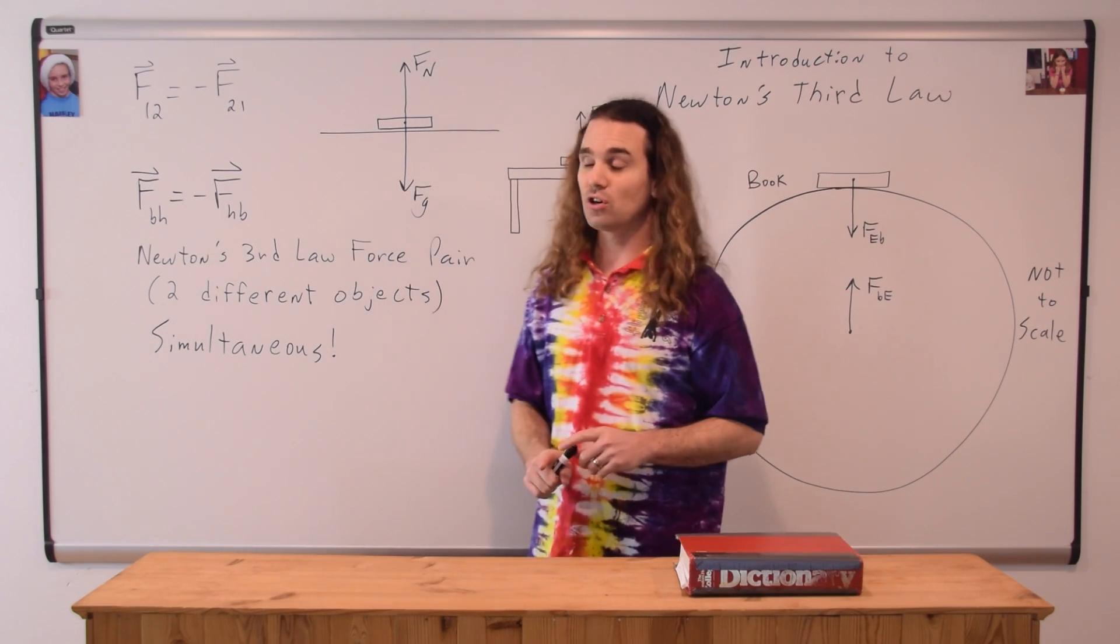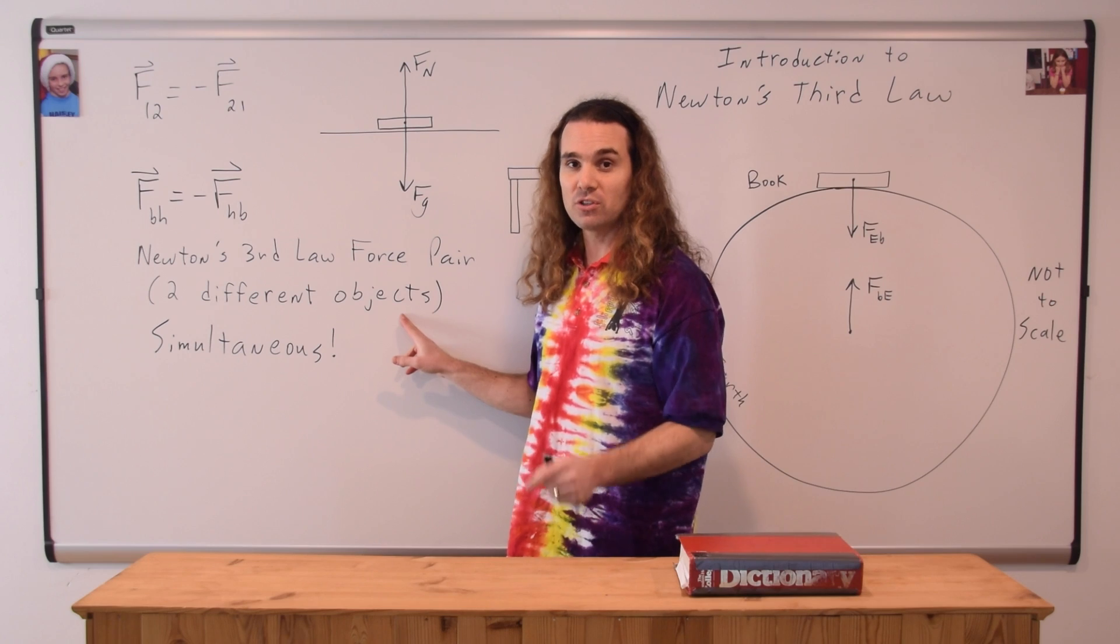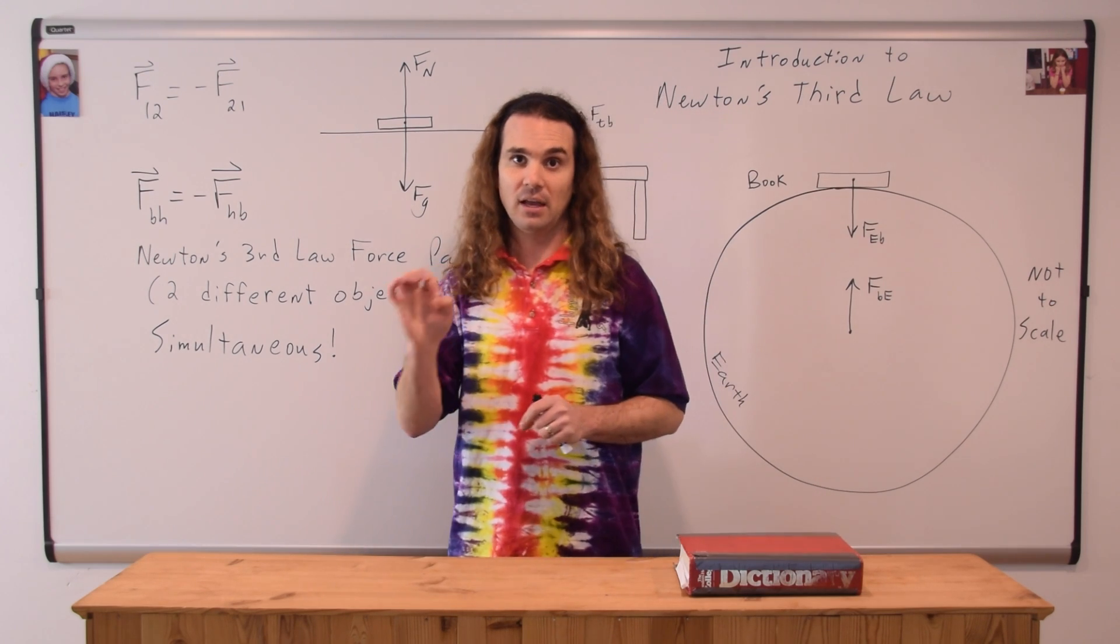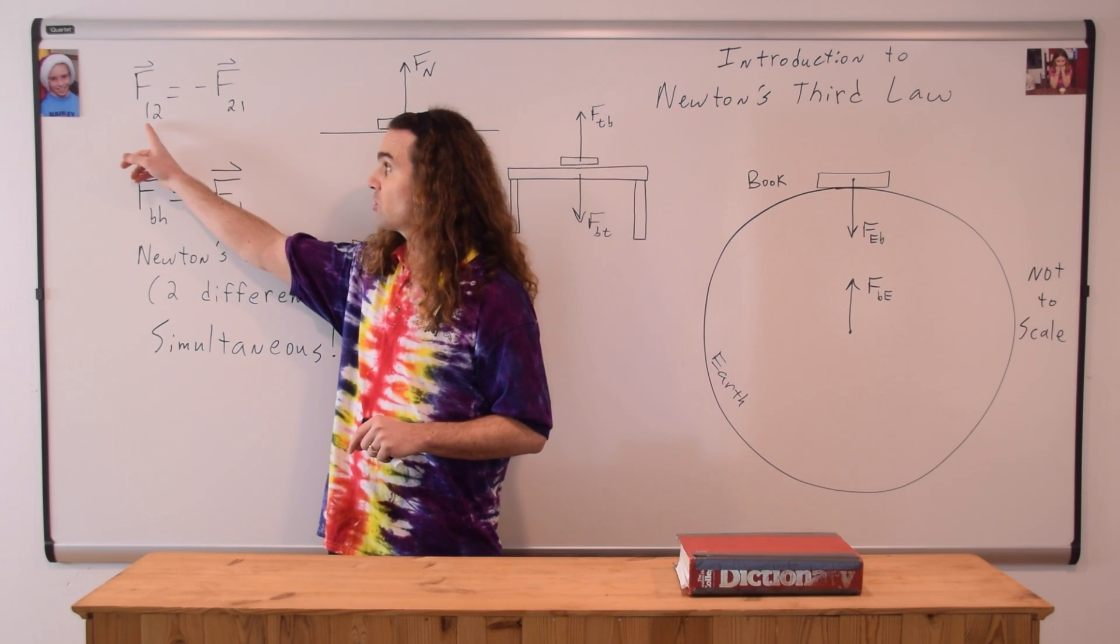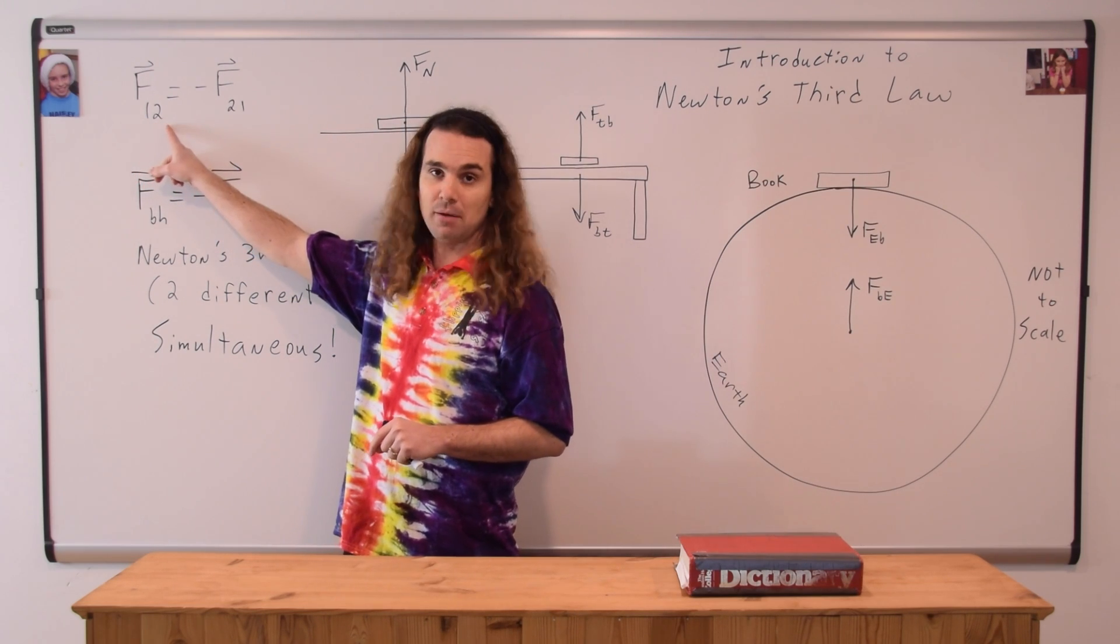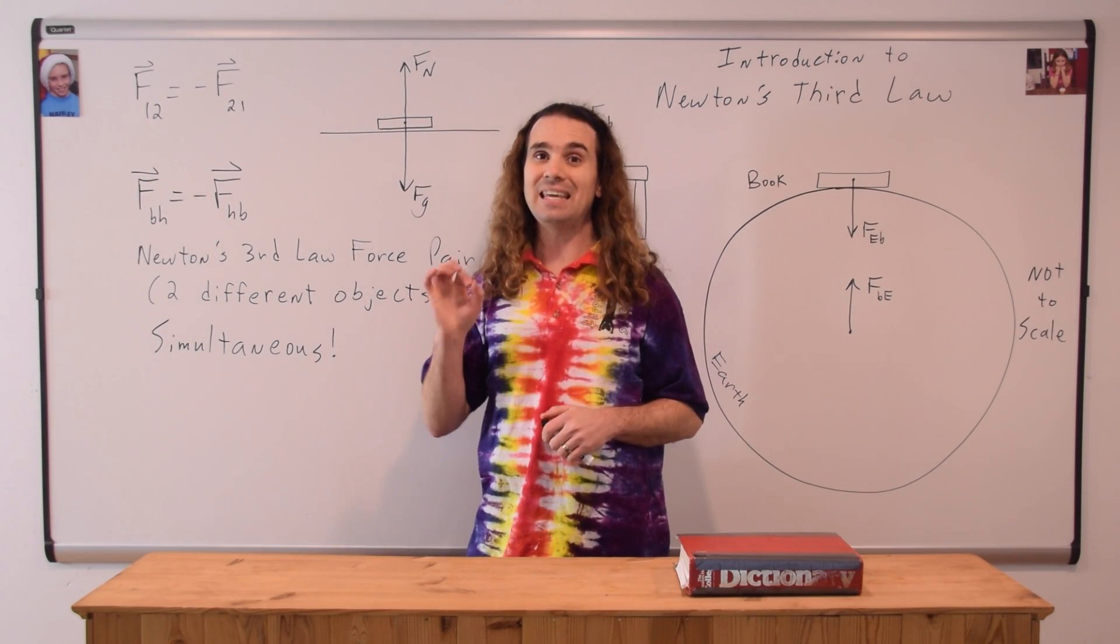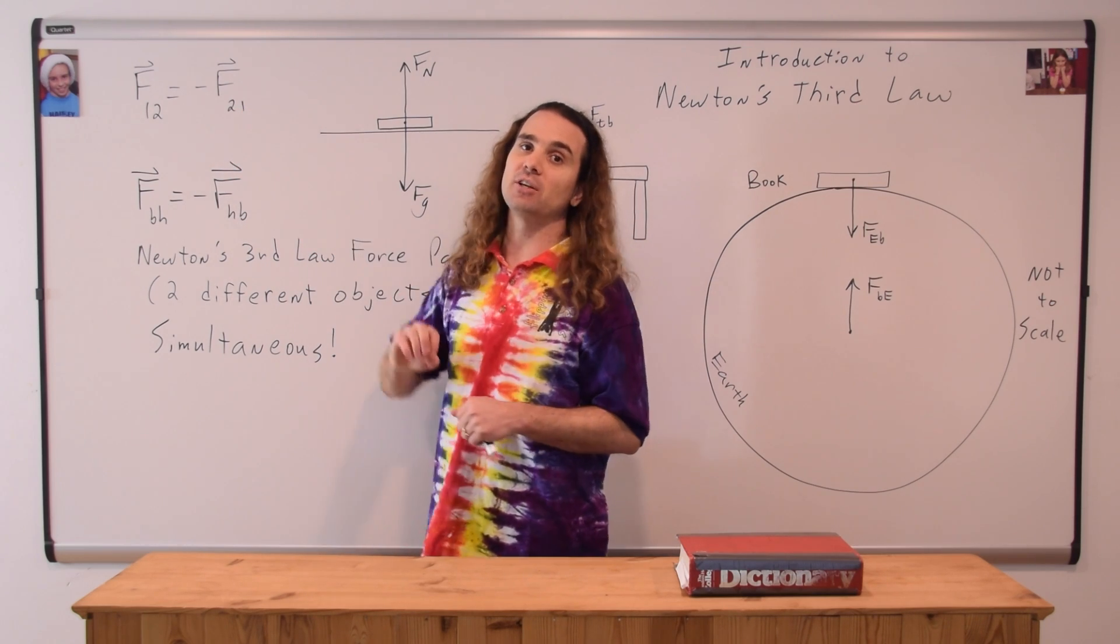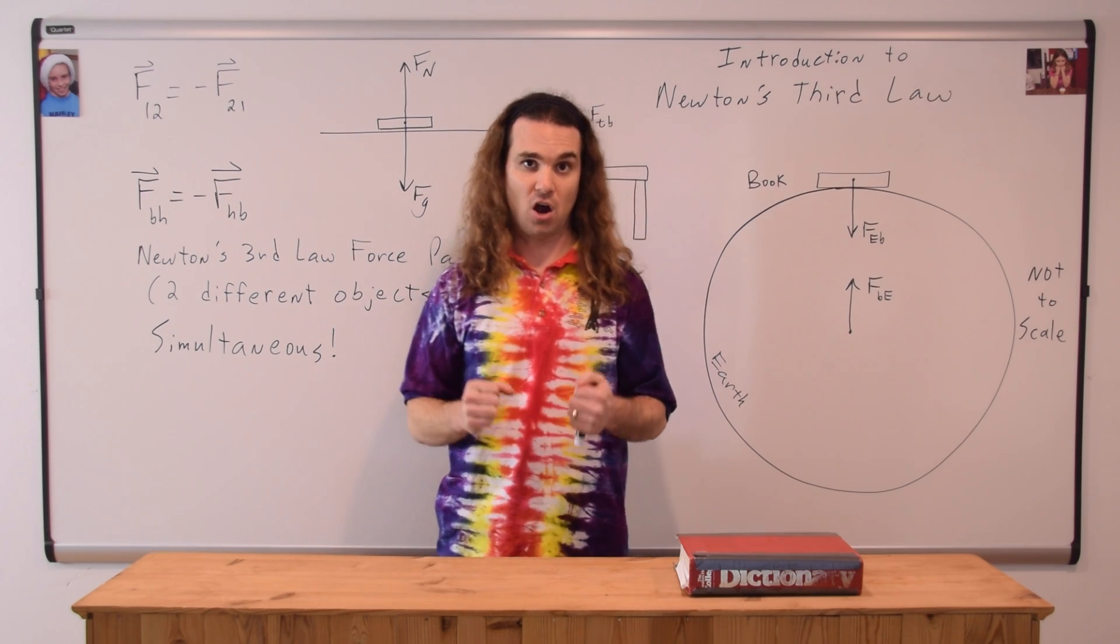Every Newton's third law force pair is forces on two different objects, object one and object two. Because, for every force caused by object one on object two, there exists an equal but opposite force caused by object two on object one, where both forces are vectors.